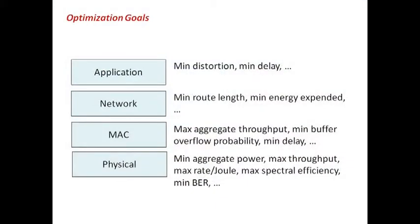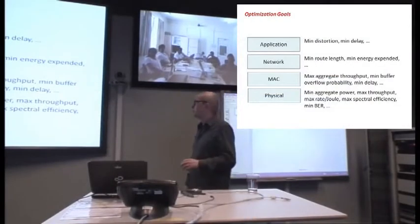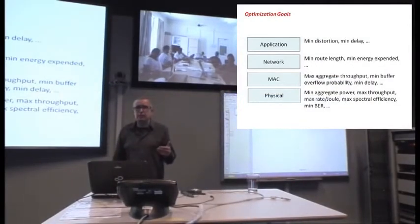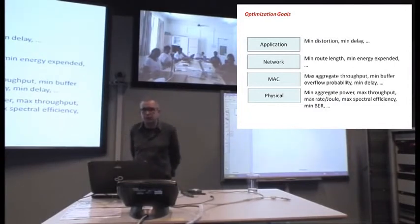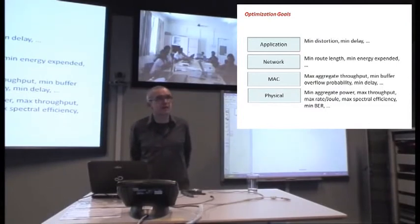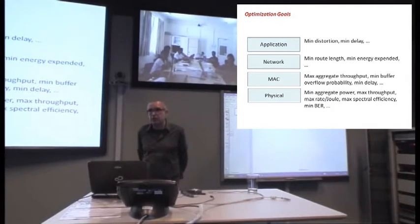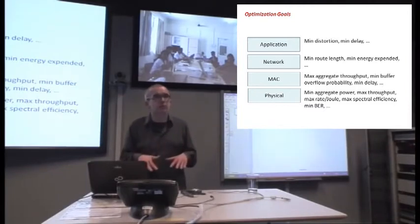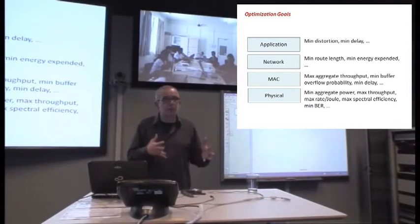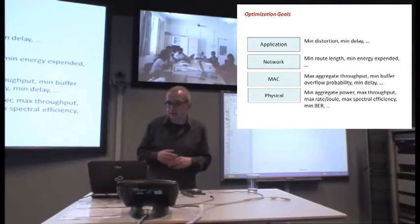And then you have to define optimization goals. So what are you trying to ultimately achieve? From the application point of view, you may want to minimize the distortion in the receipt of the application, or minimize the delay, especially for real-time applications. At the network level, you may want to minimize the length of the route and the energy expended in delivering a packet. At the MAC layer, you want to maximize the aggregate throughput of all the users sharing the medium, minimize delay in gaining access. At the physical layer, you want to minimize the aggregate power, maximize throughput, maximize the data rate per energy expended, minimize the bit error rate, and so on.